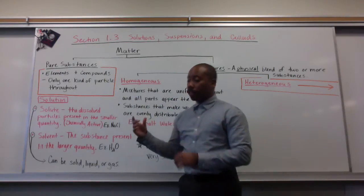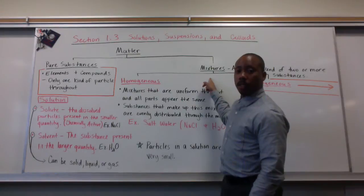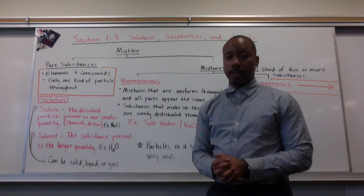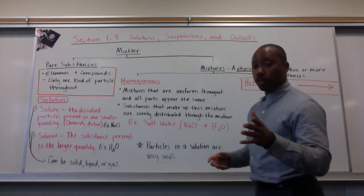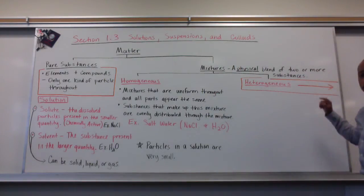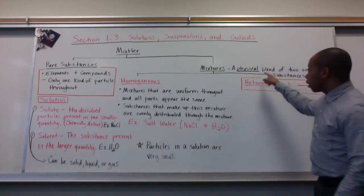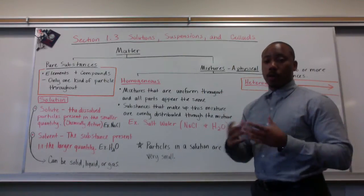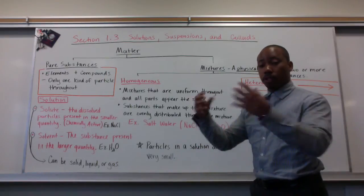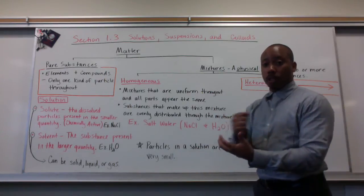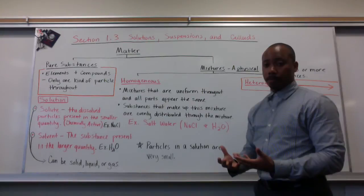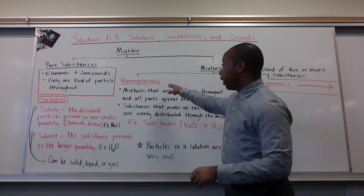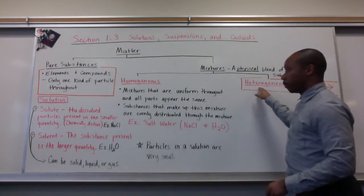The other side of matter is mixtures. This section deals with what a mixture is and the different types of mixtures that exist. A mixture is a physical blend of two or more substances. The key of this definition is that it's a physical blend — there's no chemical reactions happening. You're simply putting two things together and physically mixing them together.